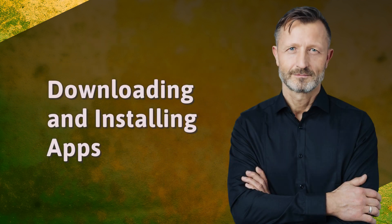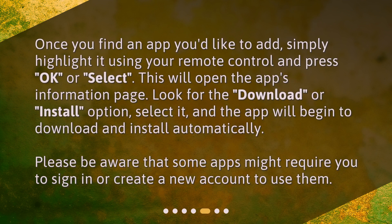Downloading and installing apps: Once you find an app you'd like to add, simply highlight it using your remote control and press OK or Select. This will open the app's information page. Look for the Download or Install option, select it, and the app will begin to download and install automatically. Please be aware that some apps might require you to sign in or create a new account to use them.